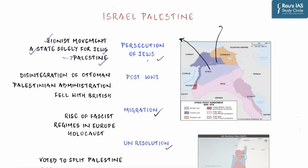The question arises: how could this migration take place? They could migrate because of a special situation created as a result of World War One. The Ottoman Empire, which controlled most of the Middle East, disintegrated as a result of WWI. As part of the post-war settlement, the administration of the Palestinian region was handed over to the British. This arrangement, where British, French, and Russian governments decided to divide the region among themselves, is known as the Sykes-Picot Agreement.